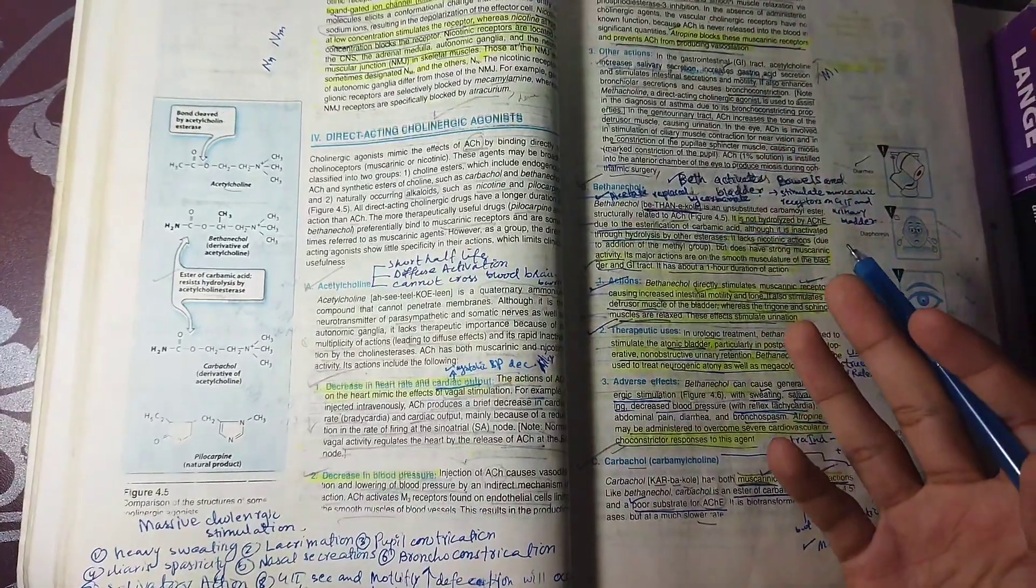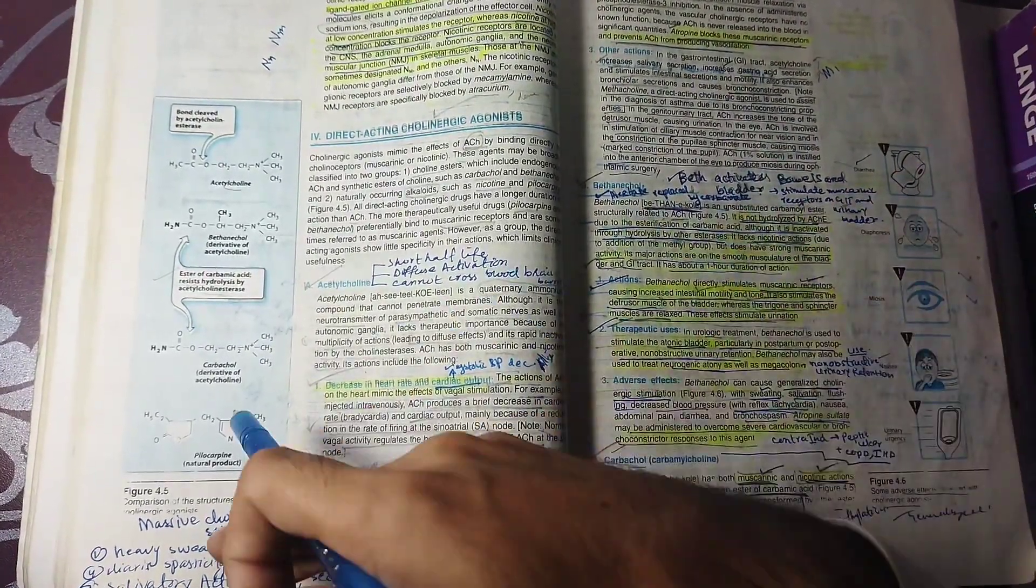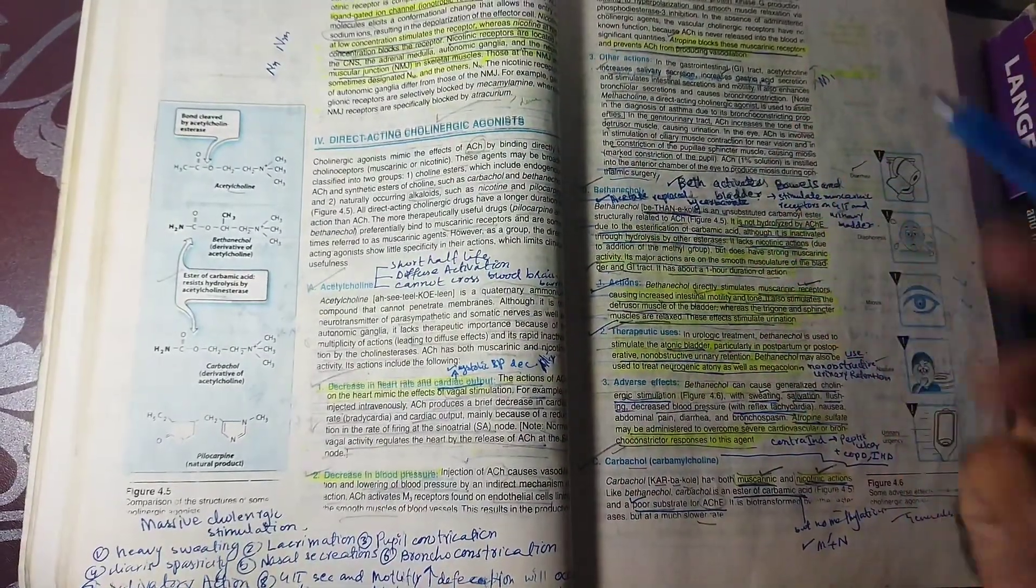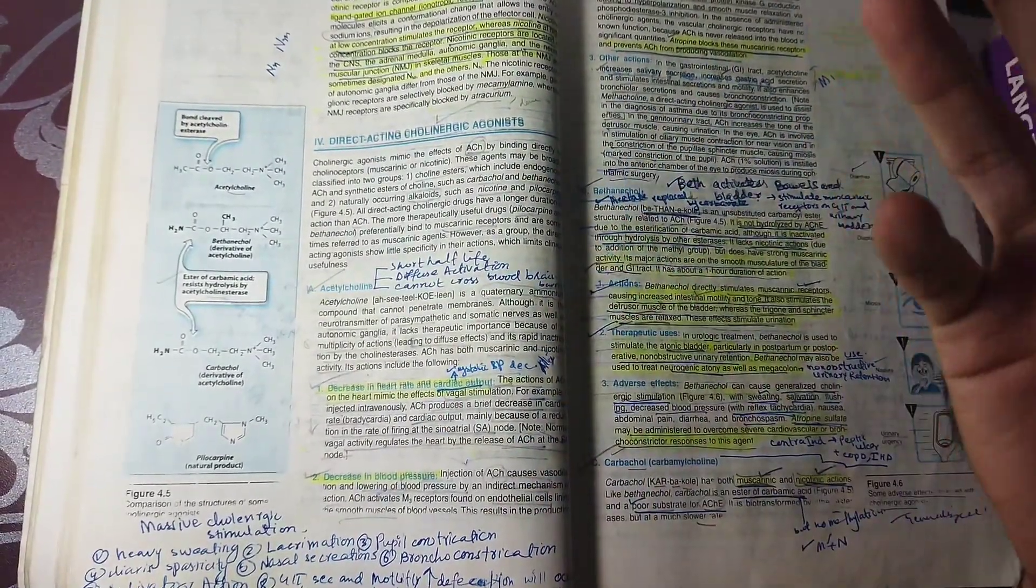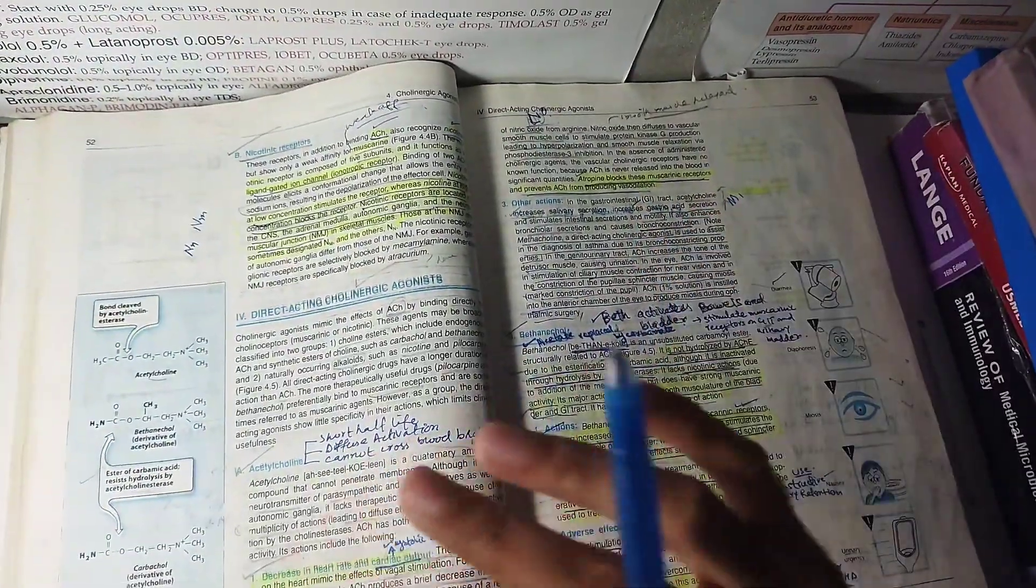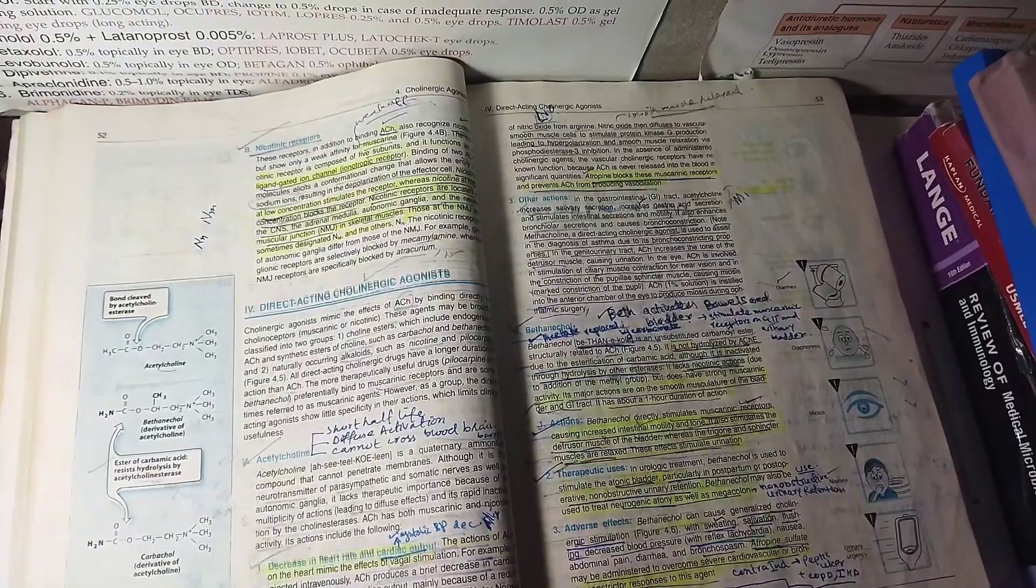We have miosis, and as well as bradycardia. I've already told you there will be vasodilation, hypotension, and increased urination. These generalized cholinergic stimulation effects are summarized here. Thank you very much. In the next video, we will talk about the next topic.